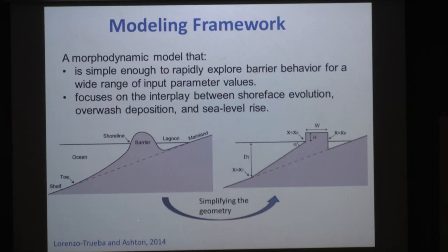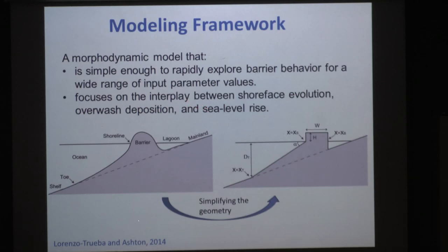The reasons we had for building our model were very clear. First, we wanted a model that was able to run fast so we could explore a wide range of parameter values — because parameters in natural systems are typically poorly constrained. We also wanted to look at the feedbacks between overwash fluxes and surface dynamics.